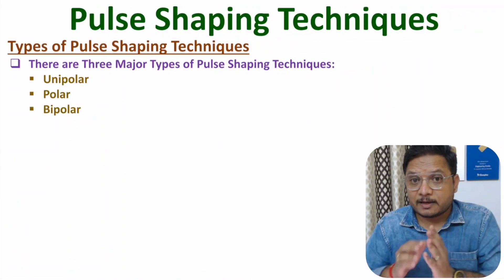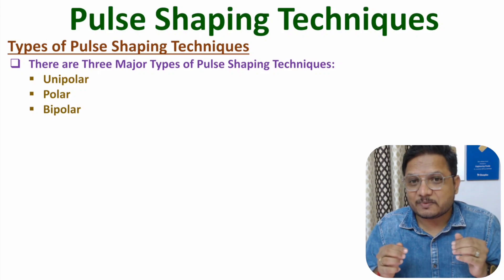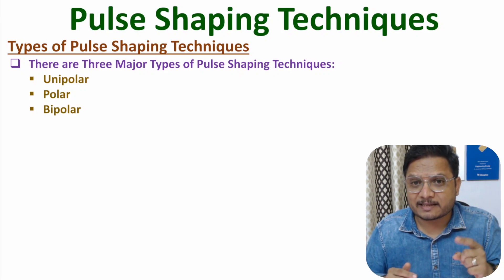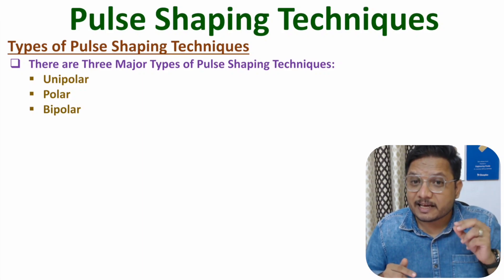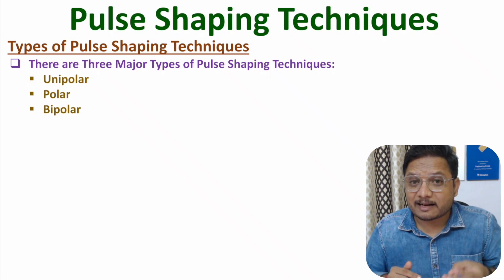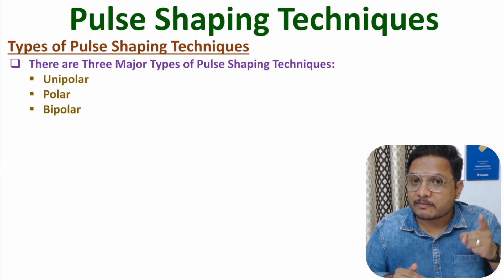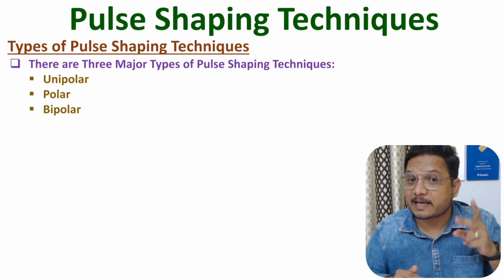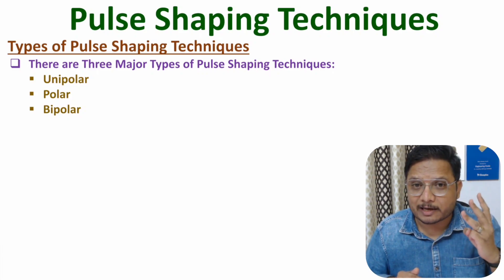Hello friends, welcome to Engineering Panta family. In this video, I will explain pulse shaping techniques with great clarity. In general, there are three categories of pulse shaping techniques: the first one is unipolar, second one is polar, and third one is bipolar.